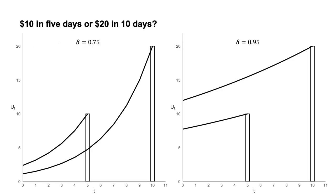The following figure visualizes the choices and Chelsea and Dorothy's discounting of the payoffs. In both charts, vertical bars represent the $10 in 5 days and $20 in 10 days. The lines projecting back to t equals 0 represent the discounted utility of those payoffs at each time. When delta equals 0.75, the heavy discount to the more distant payoff means it has a lower discounted utility than the smaller, sooner payment of $10. When delta equals 0.95, the discount is less severe and the $20 in 10 days has a higher discounted utility than the $10 in 5 days.